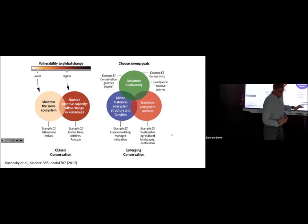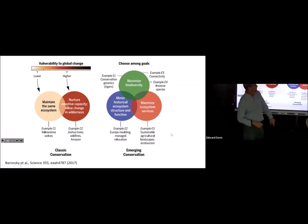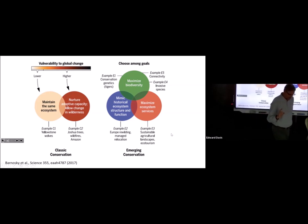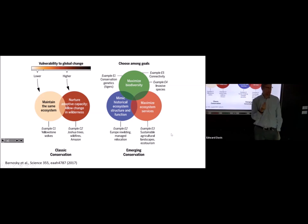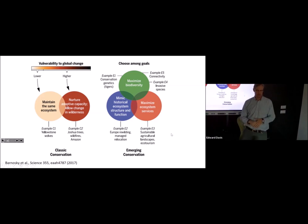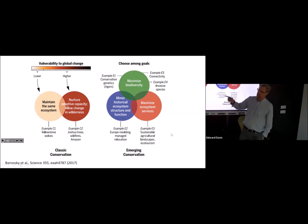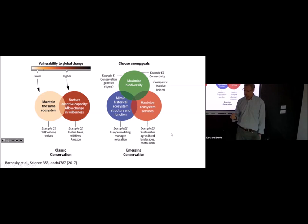When dealing with an ecosystem that is already a novel ecosystem, you have three main choices. One is maximizing biodiversity — the old idea of keeping as many pieces of the machine as possible. You might focus on conservation genetics, like we do with tigers, to maintain high genetic diversity within a species. Or thinking about connectivity between habitat patches so species can move around and find habitat where they can thrive. You might also deal with invasive species — instead of regarding them as a problem, thinking of them as potential components of novel ecosystems that fit in and work in a healthy ecological context.